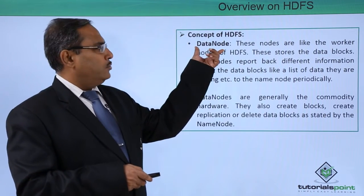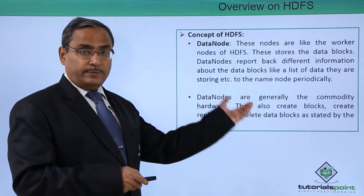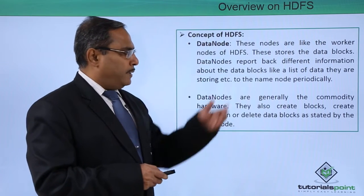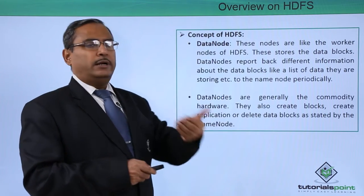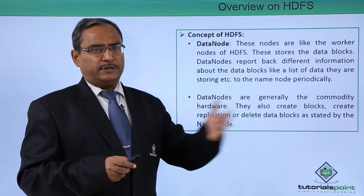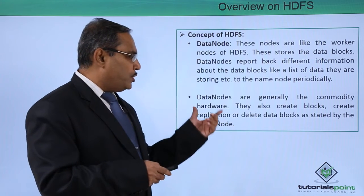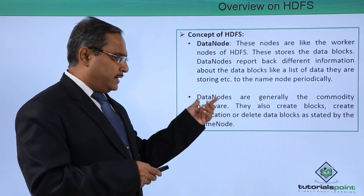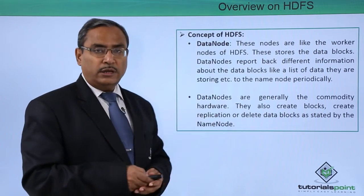Next, let us discuss the data node. These nodes are like the worker nodes in HDFS — the name node is the manager and the data node is the worker. The data node stores the data blocks and reports back different information about the data blocks, like a list of data they are storing, to the name node periodically. Whatever data it is containing, it will send a report to the name node after a certain period of time. Data nodes are generally commodity hardware and they also create blocks, create replications, or delete data blocks as directed by the name node.